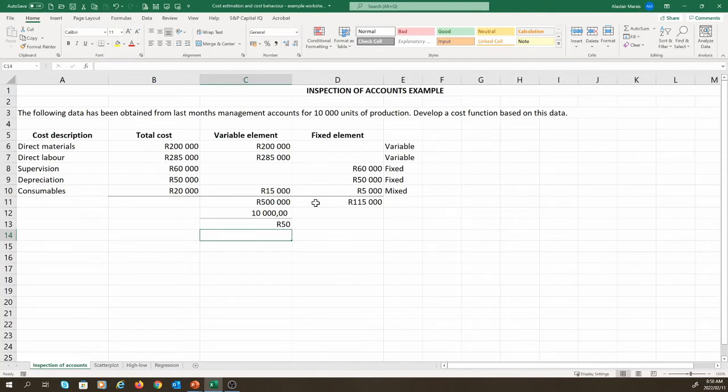Again, other individuals might have identified a different cost driver. Alternatively, you might find it more appropriate to have different cost drivers for each variable cost. All of this would depend on your professional judgment. Once we have the variable cost per unit, or per other fixed driver, we can derive our cost function. In this case, it'll be y being the total cost is equal to 50 Rand per unit, which will be represented by x, plus our fixed cost of 115,000 Rand. So, that would represent our cost function.